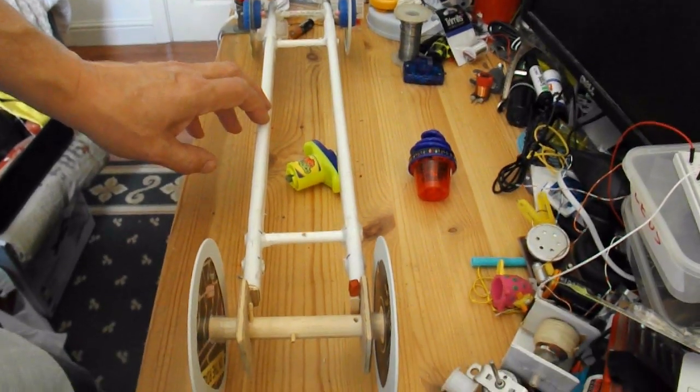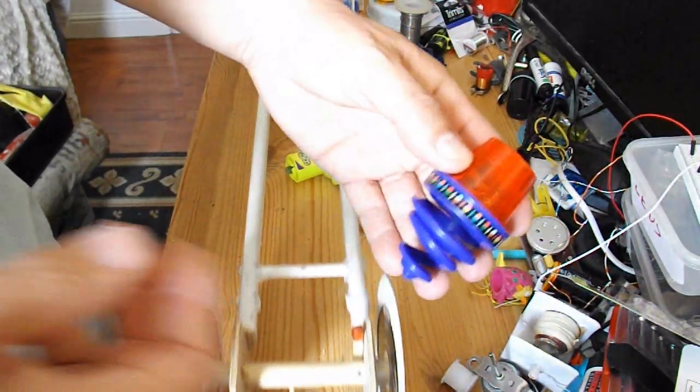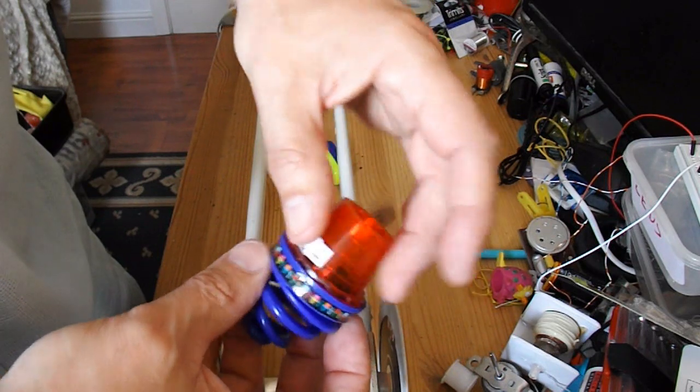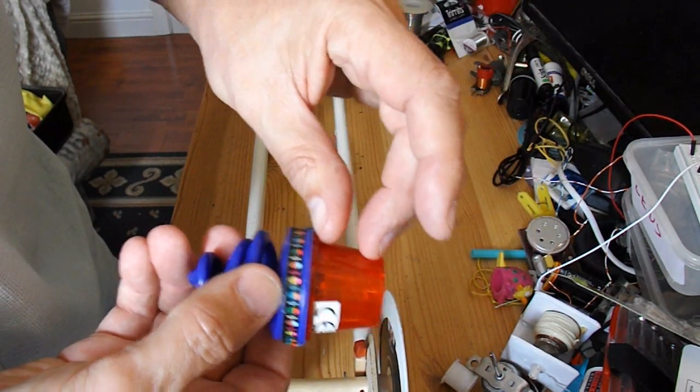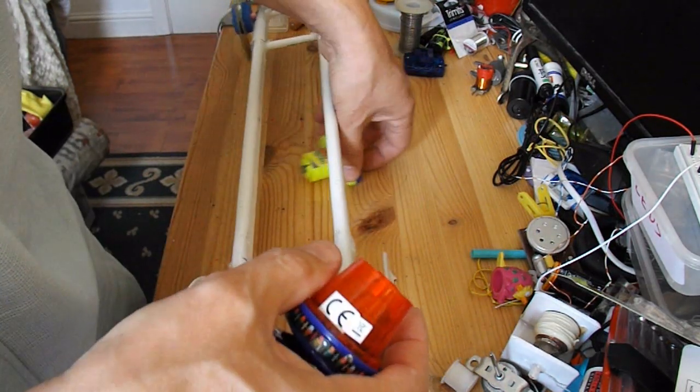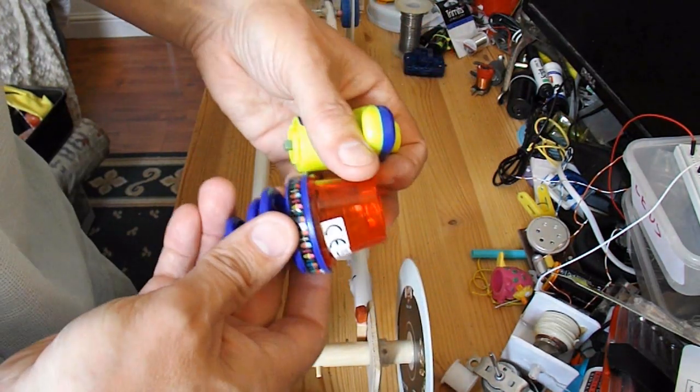So, all I'm going to do is take this spinning top apart and hot glue that piece straight on the outside of that CD. And then we'll see if we can shoot it forwards.